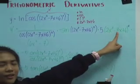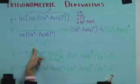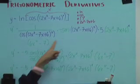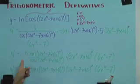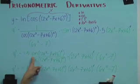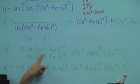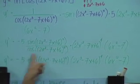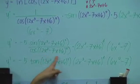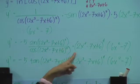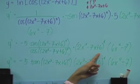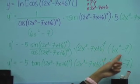Multiply it by the derivative of the block, which is 6x² - 7. Then multiply it, and you get negative 5 sine(2x³ - 7x + 6)⁵ all over cosine(2x³ - 7x + 6)⁵ times (2x³ - 7x + 6)⁴ times (6x² - 7).